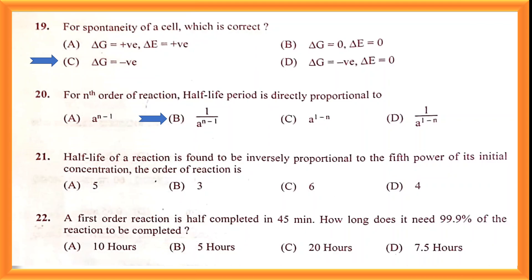Question number twenty: for an nth order reaction, the half-life period is directly proportional to 1/[A]⁰ raised to n−1. Question number twenty-one: option C — 6 is the correct answer. Question number twenty-two: a first-order reaction is half-completed in 45 minutes. It requires option D — 7.5 hours — for 99.9% completion.